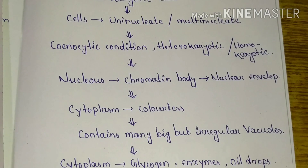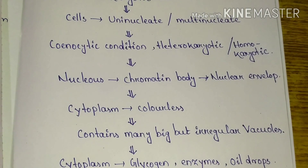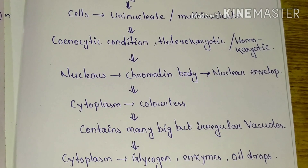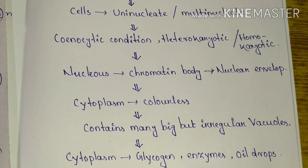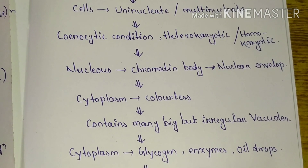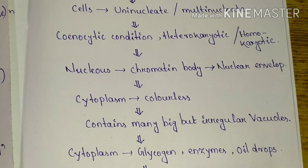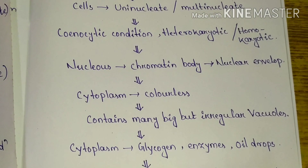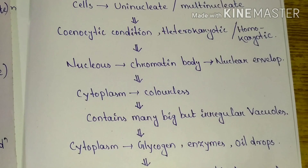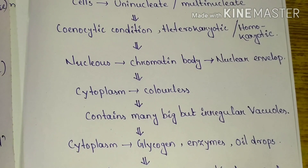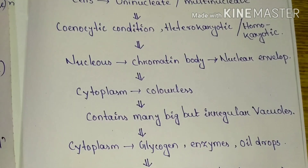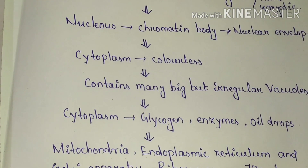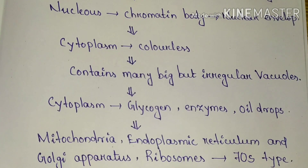In the fungal cell, the cytoplasm is colorless, but various colored fungi are found in nature. The color of the fungus depends upon certain pigments which are present in the cell wall.